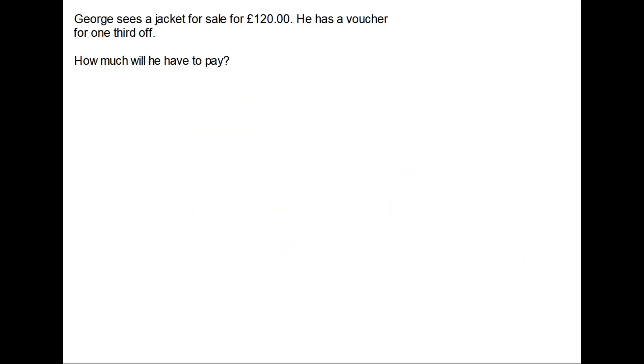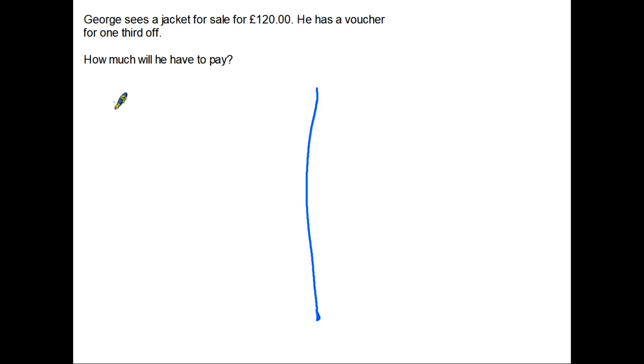Let's have a look at how this might work. Here's a question. George sees a jacket for sale for £120. He has a voucher for one-third off. And the question is asking us, how much will he have to pay? Right. I want to have a look at solving this question in two different ways. First of all, let's have a look at how much he is saving. The original price is £120. George has a voucher for one-third. So if we look at one-third of 120,